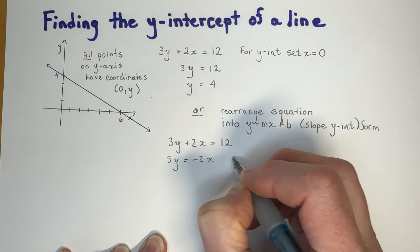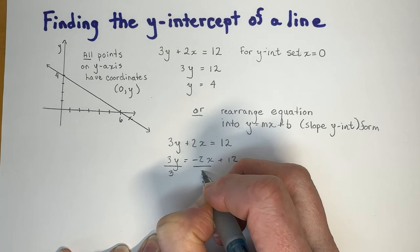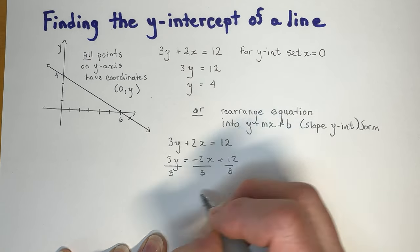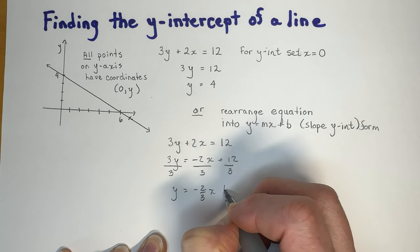So simply by moving the x to the other side and dividing by 3, because remember we want 1y, I end up with y equals minus 2 thirds x plus 4.